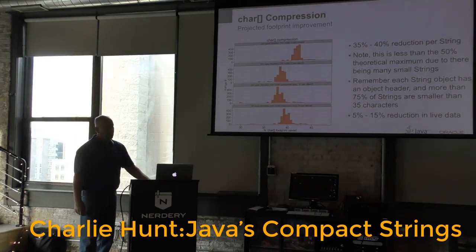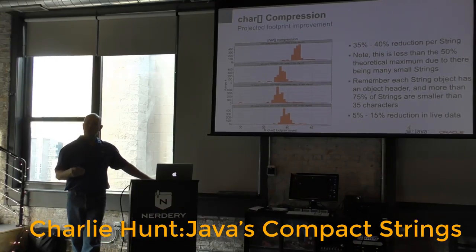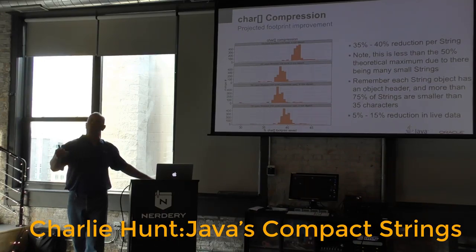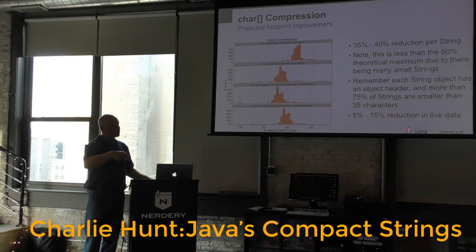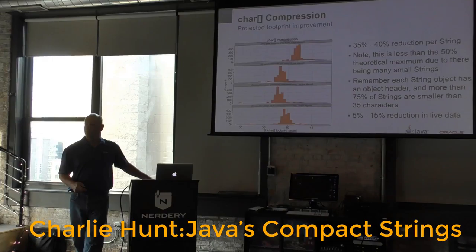If you could save 5-15% of Java heap on every Java app, what does that translate to in savings for your company? That's an argument you can take back to say: this is enough reason to consider moving to Java 9, and it will probably more than cover the cost of migration effort.